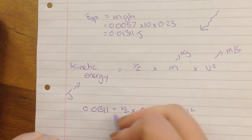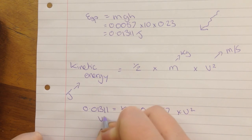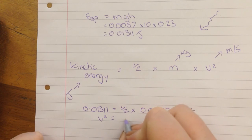So we need to do a little bit of maths. And we can work out that the velocity squared is equal to 4.6.